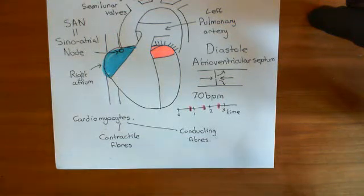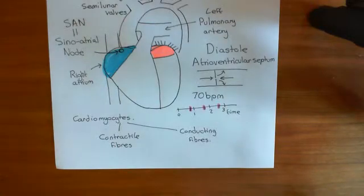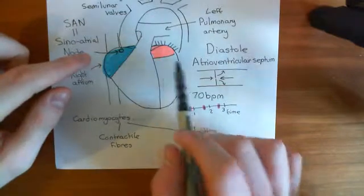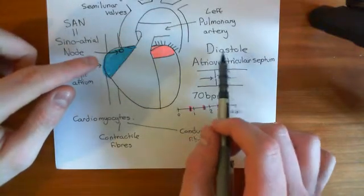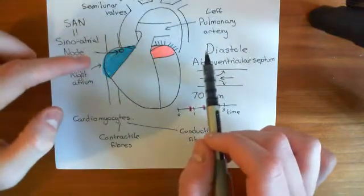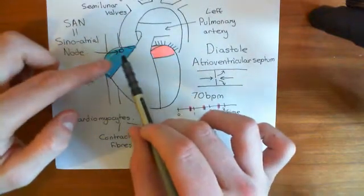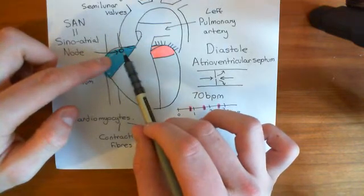Welcome to this next video in which we're discussing the heart. So far, what we've discussed is that the sinoatrial node will fire 70 times generally a minute. And when it fires, it will take the diastolic heart, which is the heart that's completely relaxed, and take it into a heartbeat. When the cardiomyocytes of the sinoatrial node fire, they will spread this action potential.